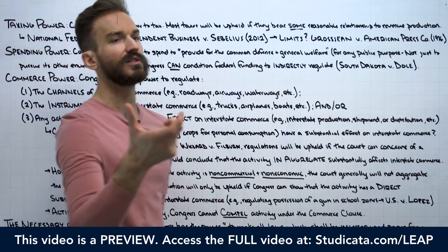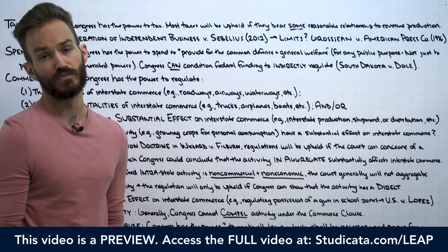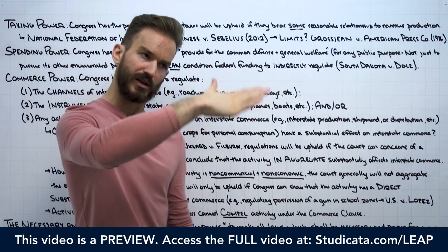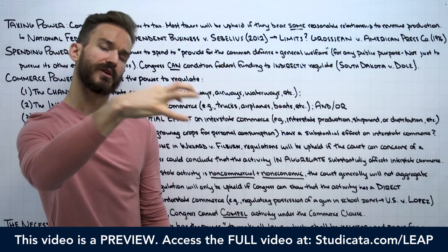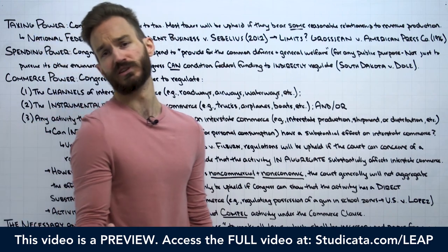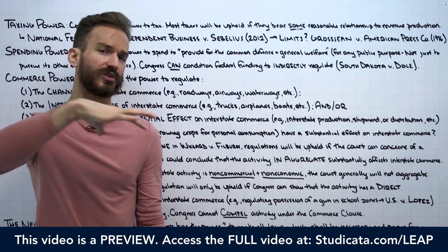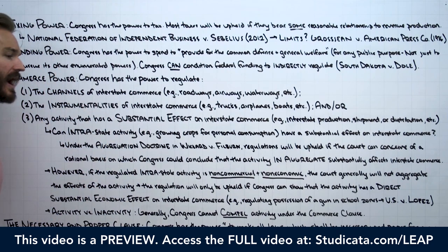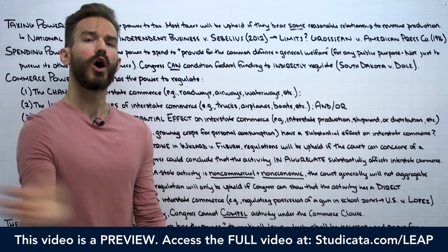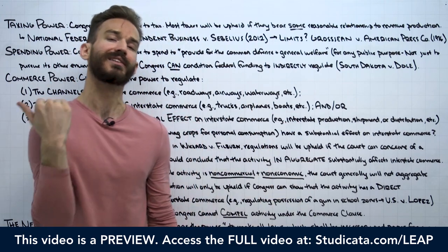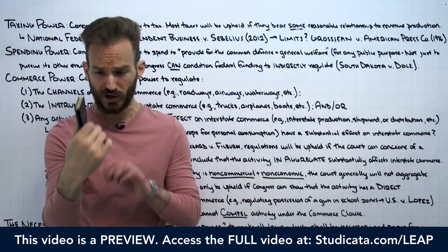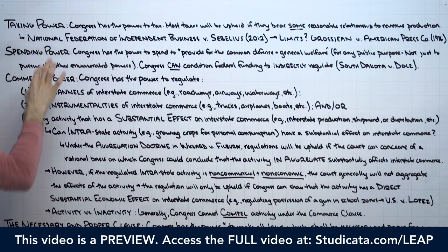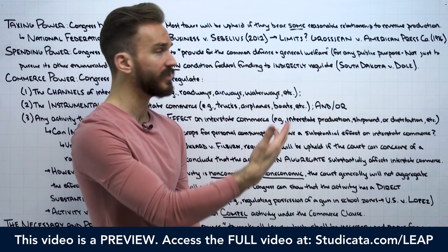This is something you'll spend a lot of time on in constitutional law class — going back to Hamilton versus Madison and through United States v. Butler. For your purposes on a constitutional law fact pattern, the answer today is that Congress is generally allowed to start with an objective and then use the powers vested to them in the Constitution to accomplish it.